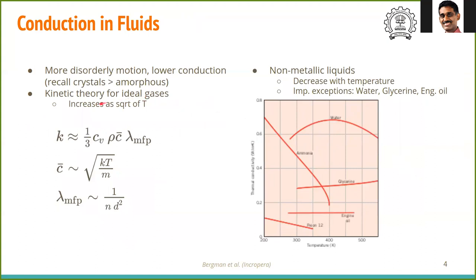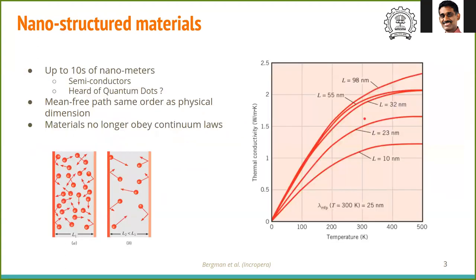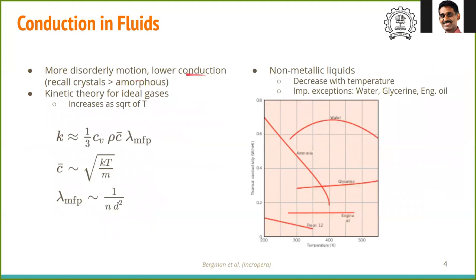In fluids it is a little easier to understand the notion of thermal conduction. One thing to understand is the difference between liquids and solids. We saw that crystalline materials have higher thermal conductivity than amorphous ones because of a more regularized way to transmit energy. Liquids are even more random than amorphous substances, and therefore liquids have a lower thermal conductivity than most solids.